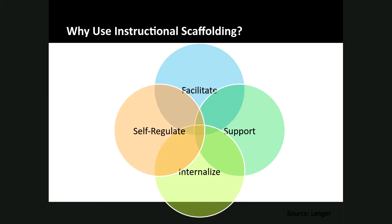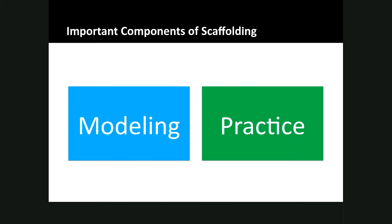Two important components of scaffolding are modeling and practice. The first step of scaffolding is the modeling process, and throughout the scaffolding process the instructor should model each step in the task or strategy as many times as necessary while talking through their thought process during each step. Modeling helps students know how to accomplish the task and why each step is necessary. After the instructor has modeled what they want students to do, students — individually or as a group — should be given the opportunity to work collaboratively with the teacher and with each other to practice the task or strategy and receive feedback to help them improve and progress towards learning goals.